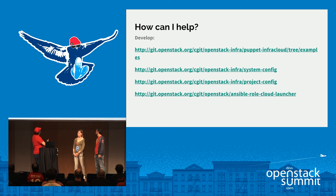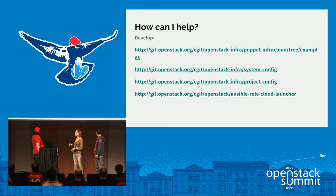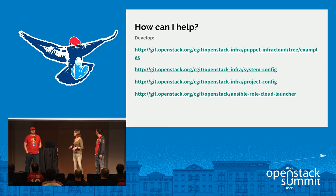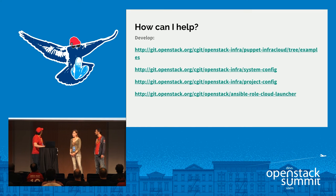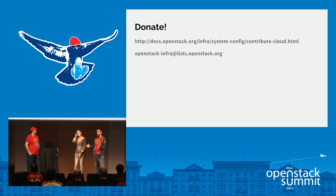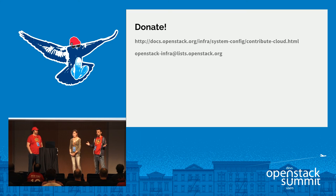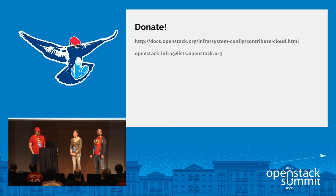Everything we do is done with an infrastructure-as-code approach. If you think we should be using a new feature, or you want to fix something, or your job on InfraCloud breaks in a weird way — you can go fix that. We have everything up as code and it's all open except for passwords and private keys. And if you have hardware or cloud resources to donate, please talk to us. We would love to have more resources so we can run even more regions, grow the current regions, and make this an even bigger initiative within the infra team.